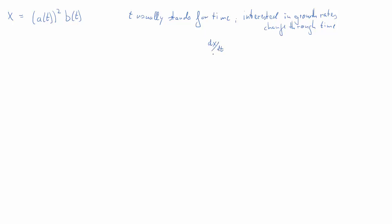What we need is how x changes with t — so dx/dt — and if t moves on by one unit, what happens. We divide that by x and that gives us a growth rate. When dealing with time we often write dx/dt as ẋ, and the first derivative over the function itself is called the growth rate. Let's see what the growth rate of x is in this example.